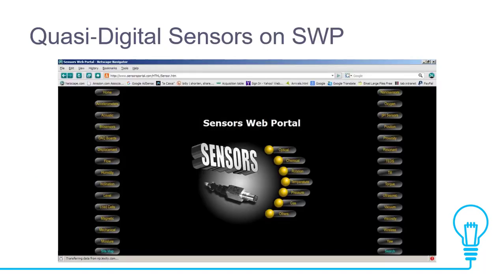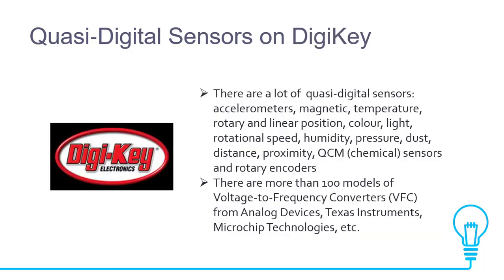If you want to see further, you can go to the sensor web portal and find the number of sensors per wireless category. I recommend you go to the sensor web portal where you can find specifications and other details. On DigiKey, an electronics website portal where you can buy sensors, there are many quasi-digital sensors available: accelerometers, magnetic, temperature, rotary, linear position, color, light, rotational speed, humidity, pressure, dust, distance, proximity, and so on. There are more than 100 models of voltage-to-frequency converters from Analog Devices also available on this portal.